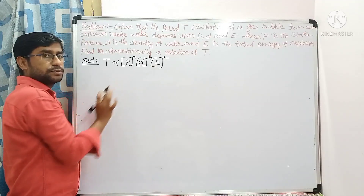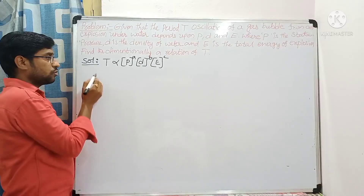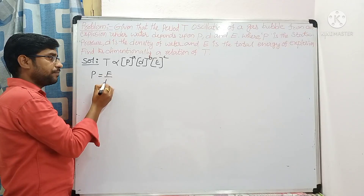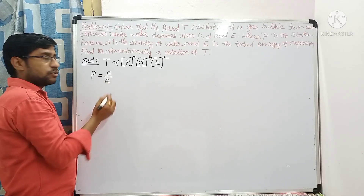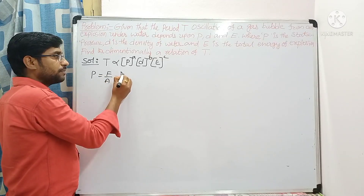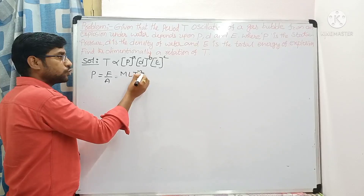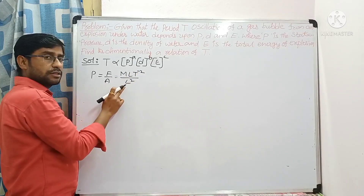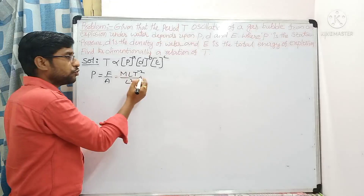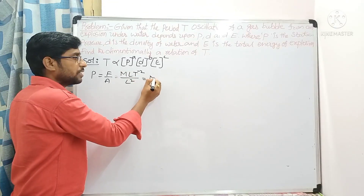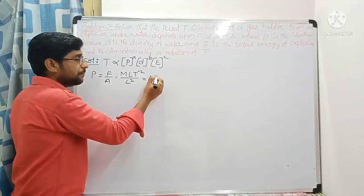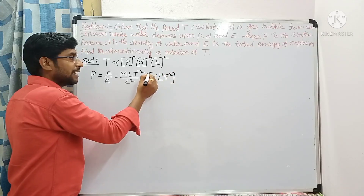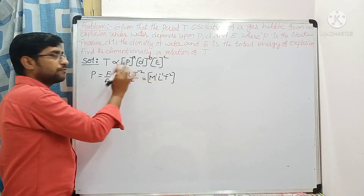Find the dimensional formula of pressure, density, and energy and substitute. Pressure: dimensional formula of p is equal to force by area. Force has dimensional formula M L T to the power minus 2, divided by area L squared. Sending L squared to the numerator gives M to the power 1, L to the power minus 1, T to the power minus 2 as the dimensional formula for pressure.